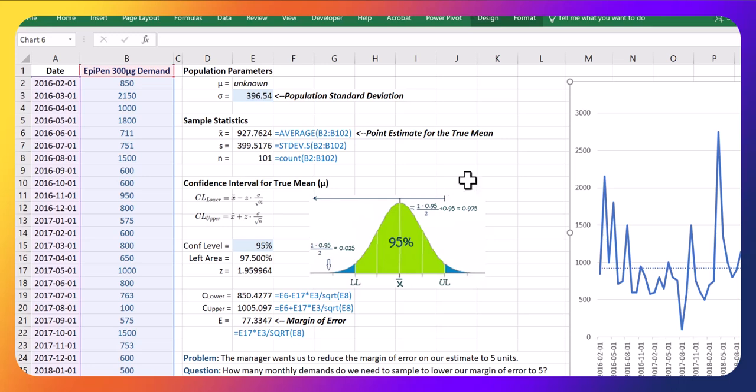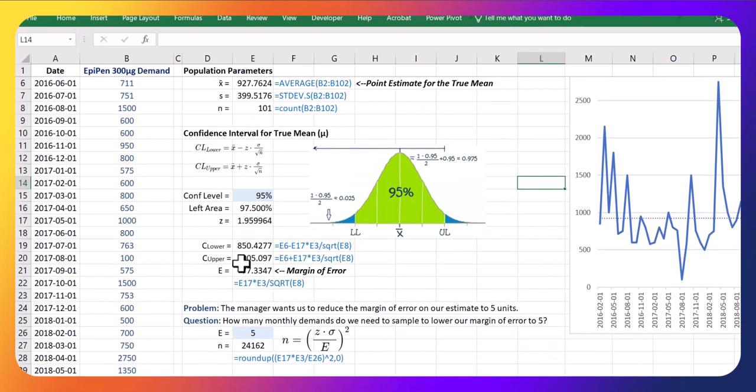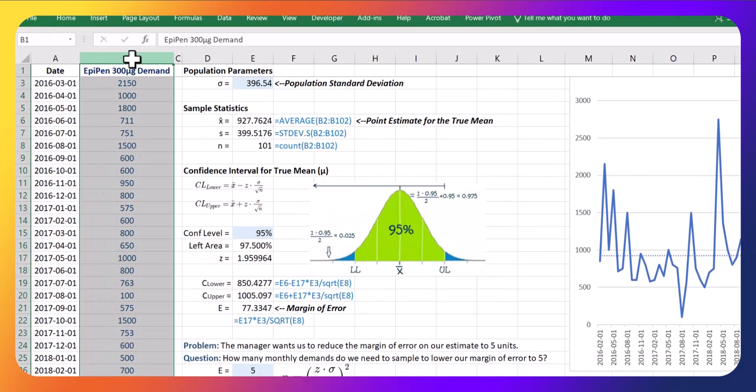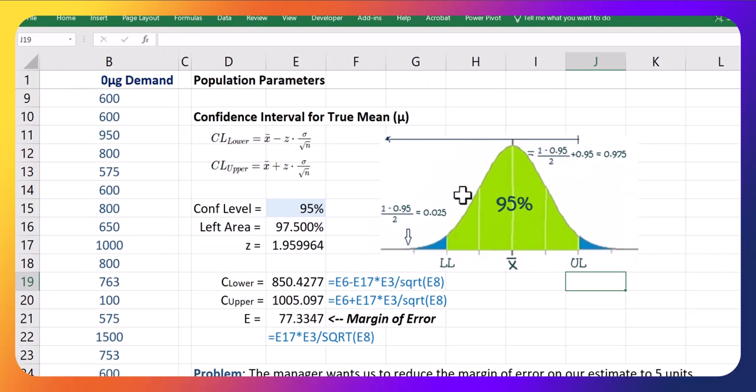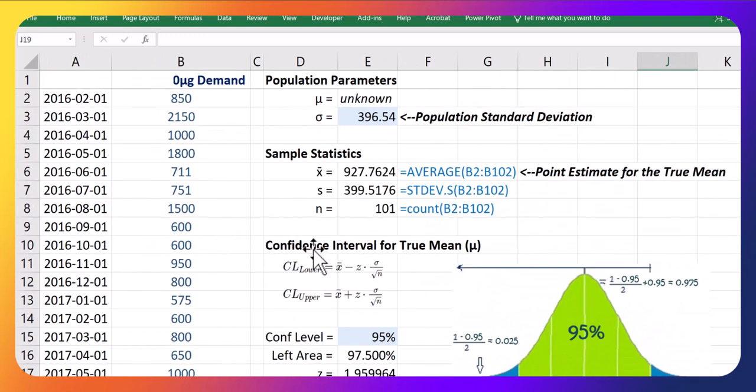In this video, we're going to look at the confidence interval we built up previously for this EpiPen demand data. We're going to look at why this sample size needs to be so large to reduce this margin of error, and we're going to discuss the feelings of just a confidence interval as an estimate and think about what else we could possibly consider when we're trying to estimate, in this case, demand data.